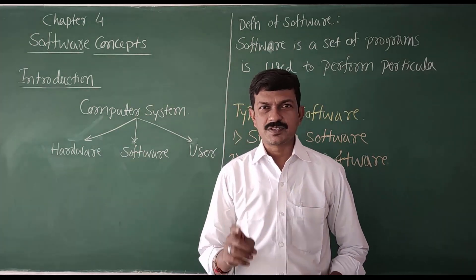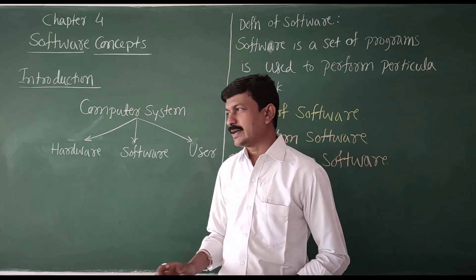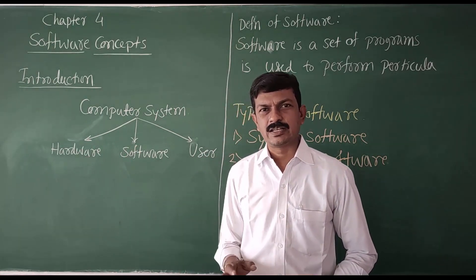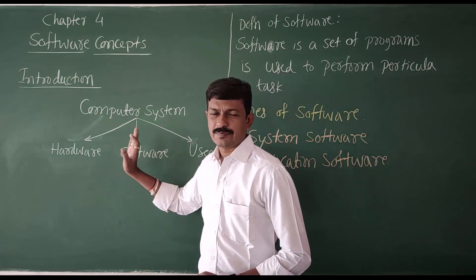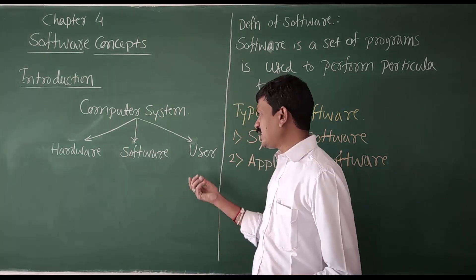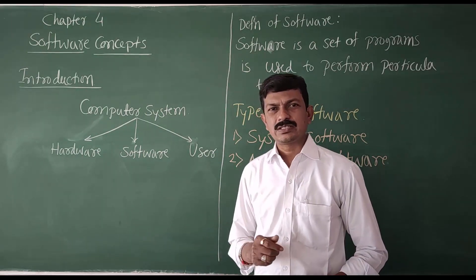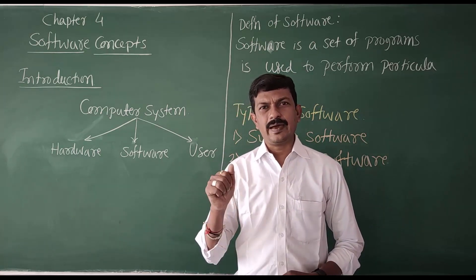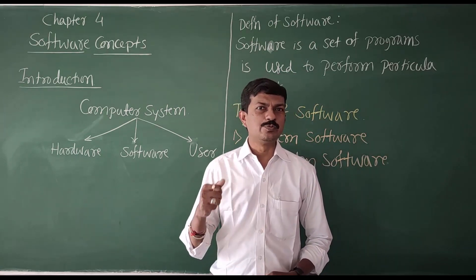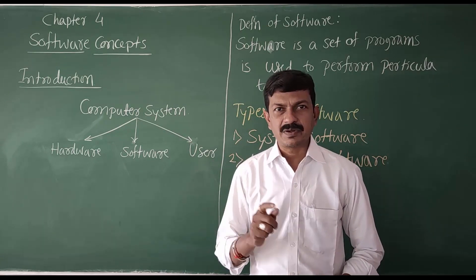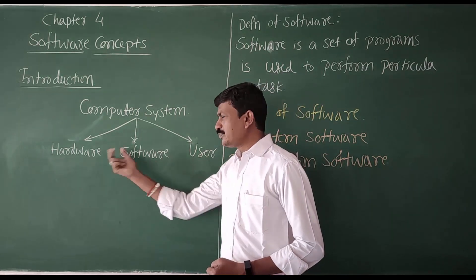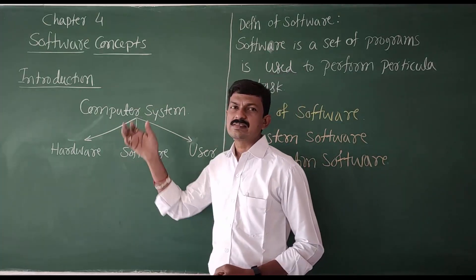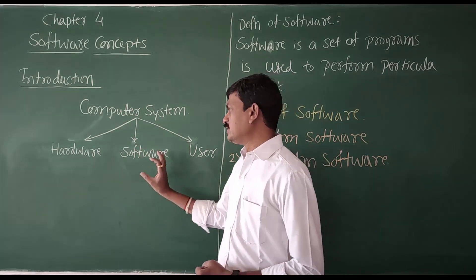If you want to define a computer system, we require hardware. Without hardware, we cannot define a computer. On the other hand, we also require a user, because the computer is not capable to perform its own task. We have a user who is able to feed the data and instructions — that person is called the user. Apart from these two things, we have one more component, and that is software.